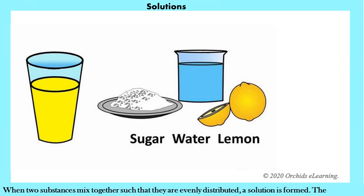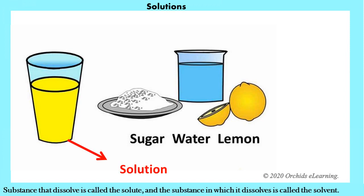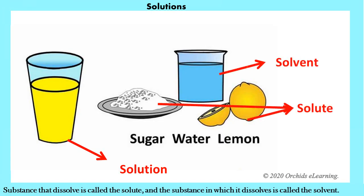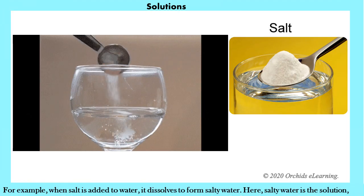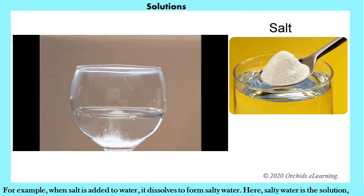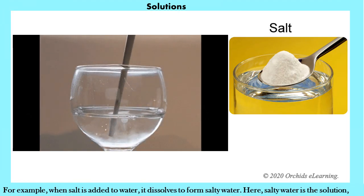Solutions: when two substances mix together such that they are evenly distributed, a solution is formed. The substance that dissolves is called a solute, and the substance in which it dissolves is called the solvent. For example, when salt is added to water, it dissolves to form salty water. Here, salty water is the solution, salt is the solute, and water is the solvent.